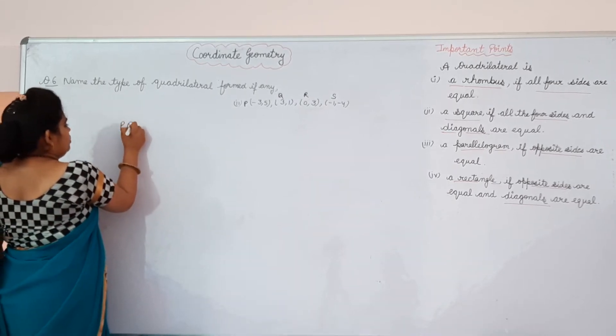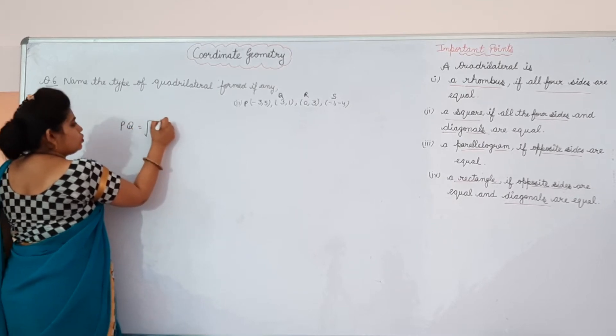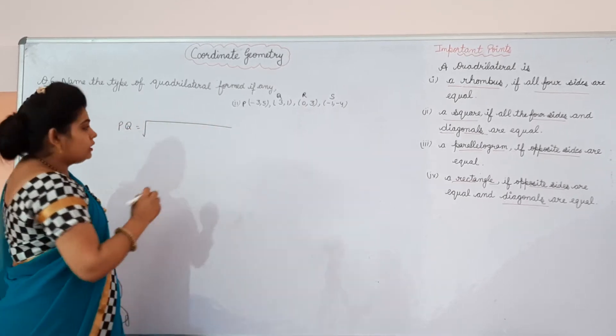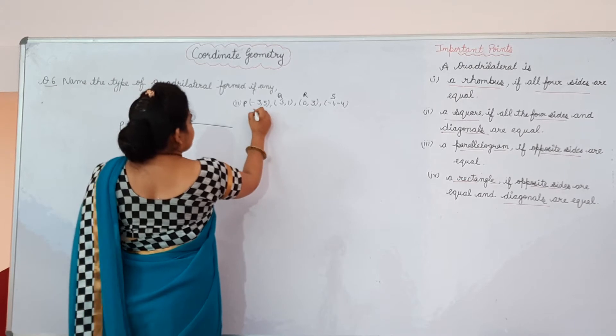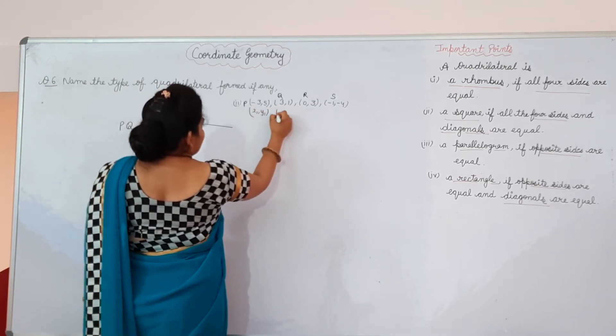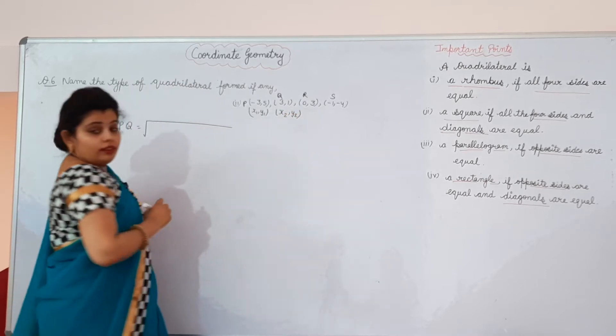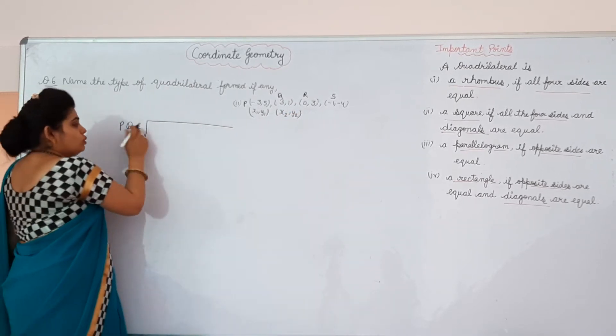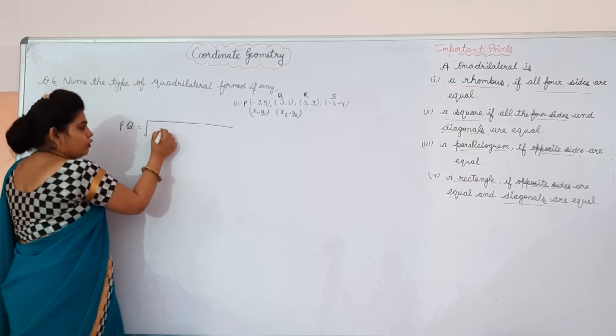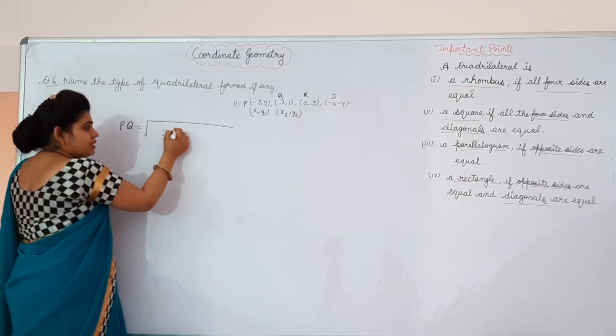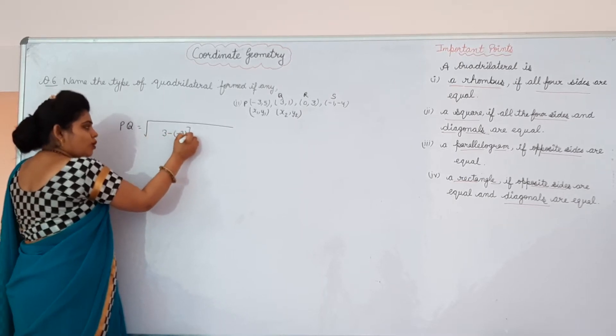For PQ, PQ will equal to square root of - for this let it is X1, Y1, X2, Y2. Then it will equal to, PQ will equal to square root of 3 minus minus 3 whole square.